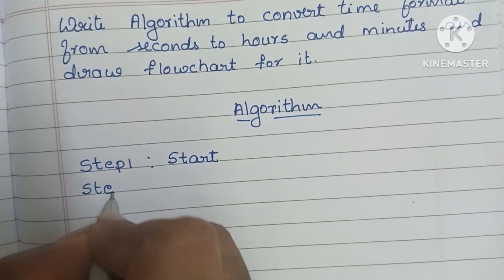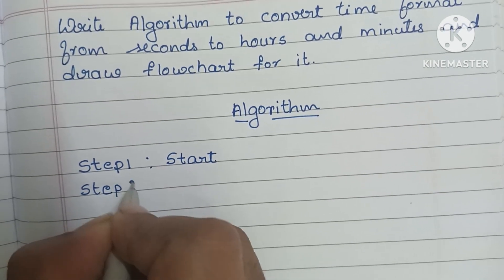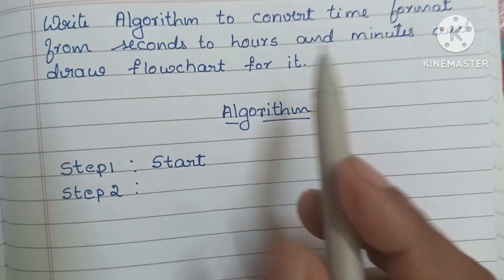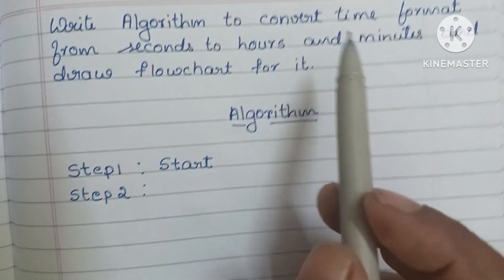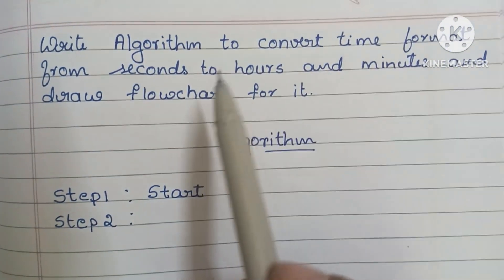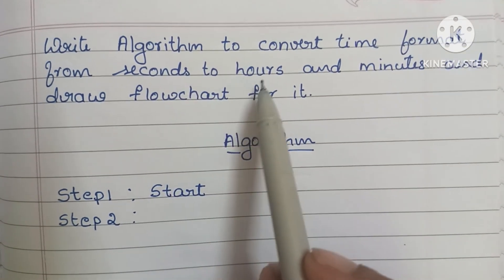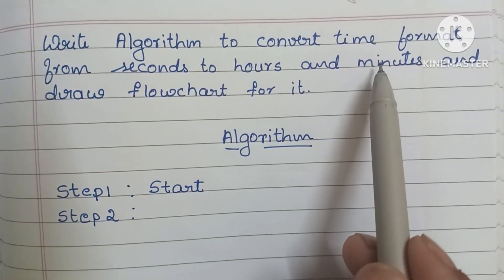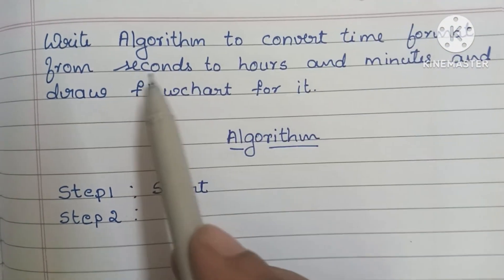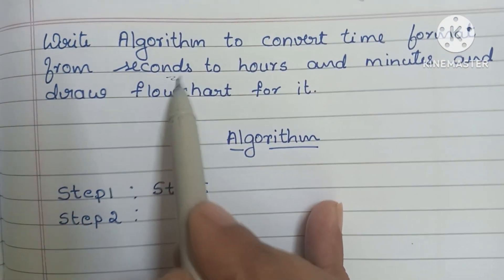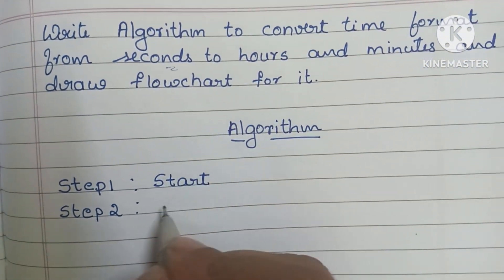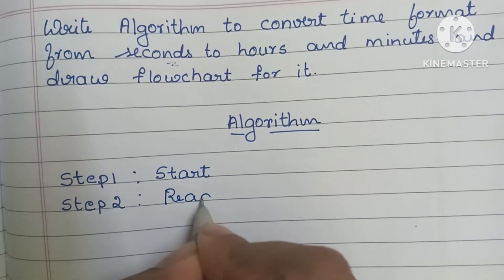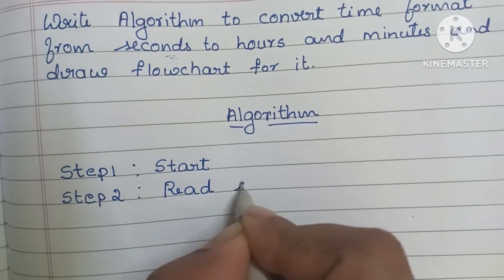In Step 2, we have to read the input values. Here we have to convert time format from seconds to hours and seconds to minutes, so we have to read the seconds value. Write: Read Second.